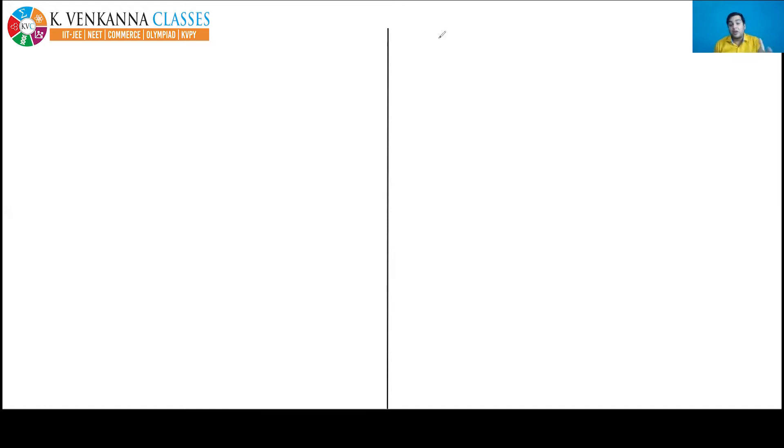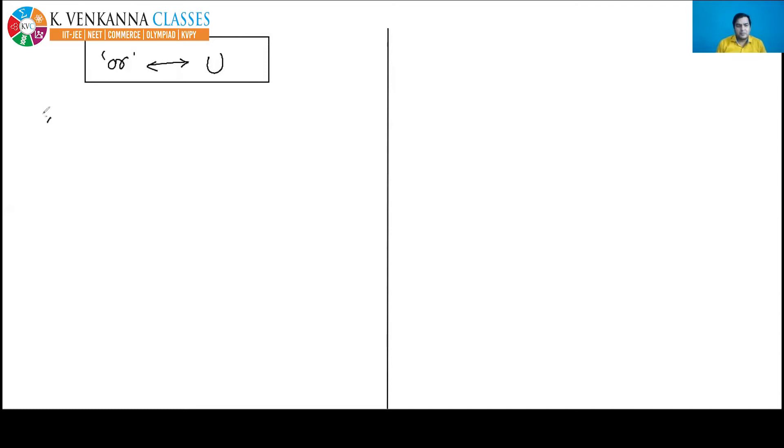Good morning Tejasvi. We are studying union of two sets, or union of two or more sets. I told you the definition of union — union means we are taking all the elements of all sets. One conclusion we got: if in any question there is an 'R', then R means union, and union means R. This was important.